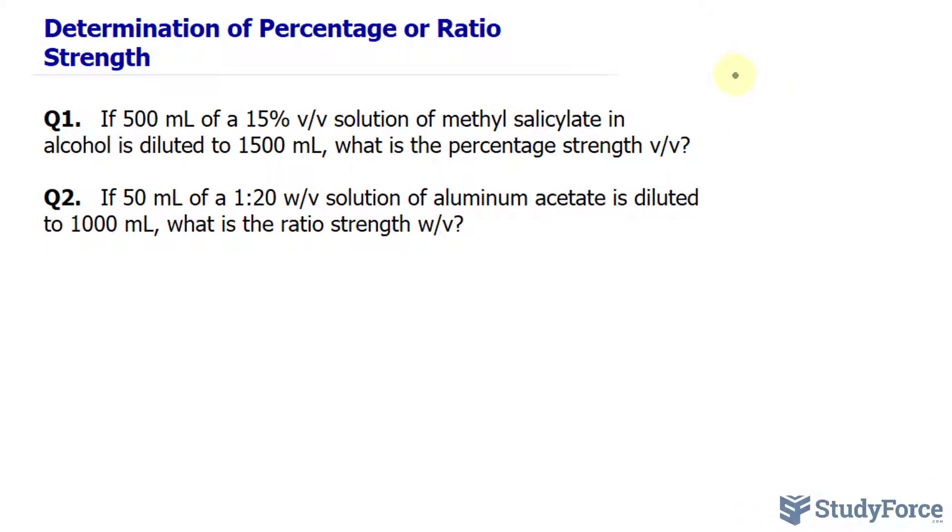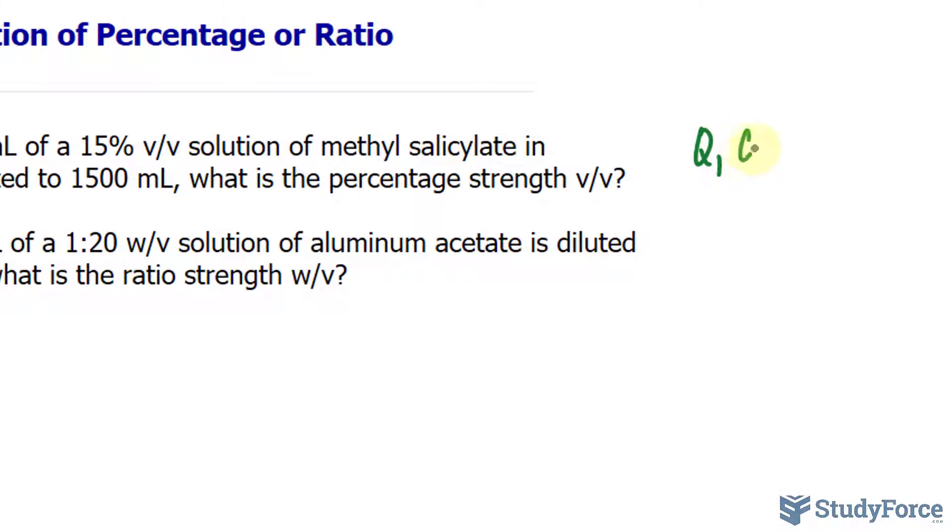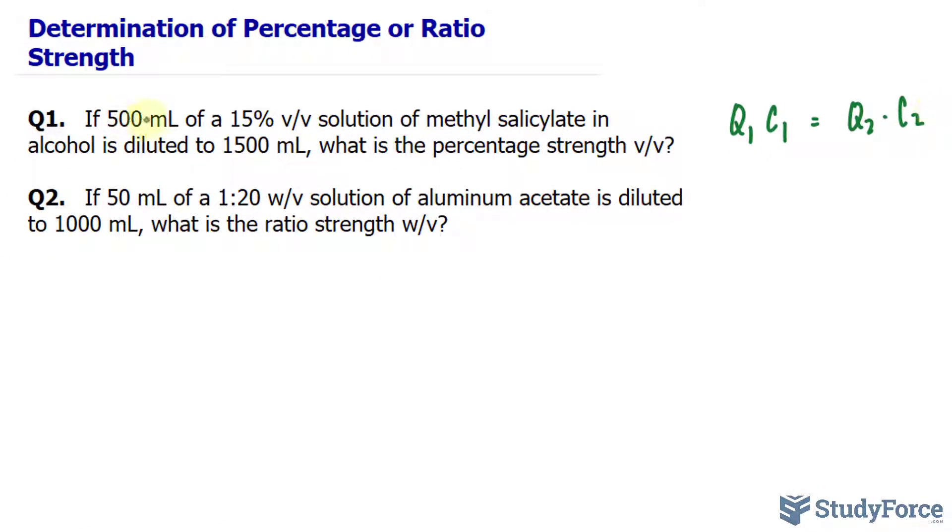Now most of these problems can be solved using the formula quantity times concentration, so the initial quantity and the initial concentration being multiplied is equal to the final quantity times the final concentration. And we can easily substitute 500 milliliters in for quantity, 15% written as a decimal, so 0.15 as the concentration, and 1500 written for Q sub 2, and then you solve for the second concentration.